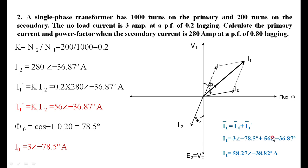This is how you find the value of primary current I1. The key is knowing the concept — expressing I1 in terms of I0 and I1 dash, and carefully working out the phase and magnitude of each component from the given data.